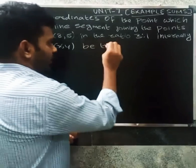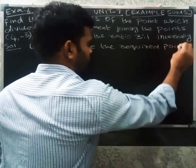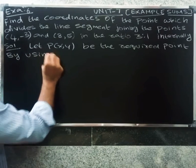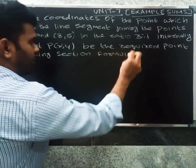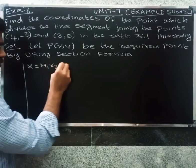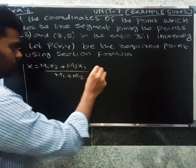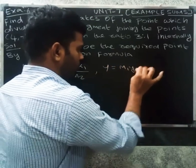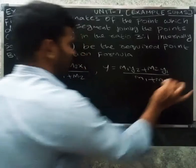Let P(x, y) be the required point. By using the section formula: x = (m1·x2 + m2·x1) / (m1 + m2), and y = (m1·y2 + m2·y1) / (m1 + m2).